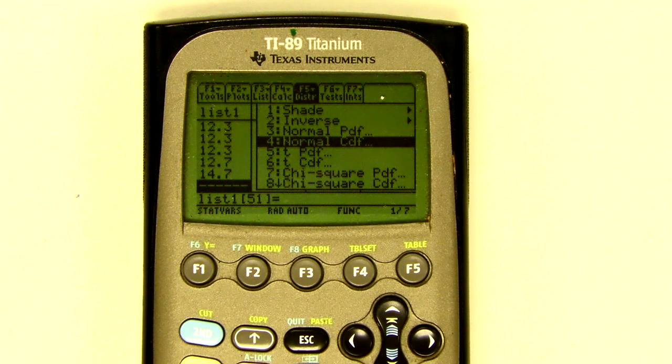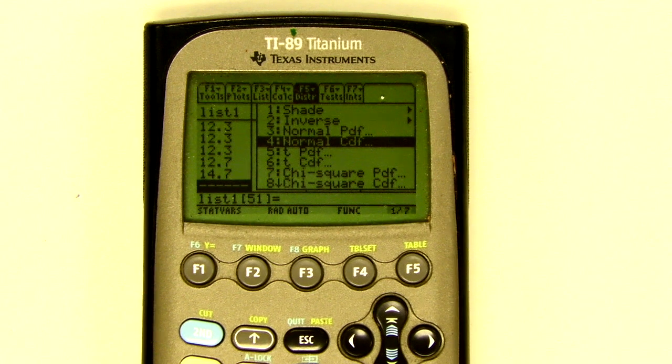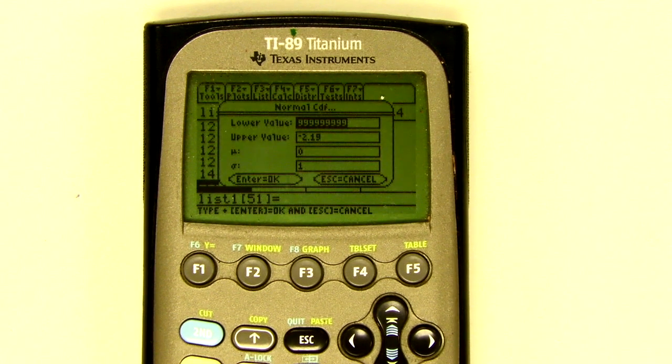That's the cumulative density function, where we have adding up of all the area underneath the curve, and that's where we're going to go. The nice thing about the TI-89 is it understands infinity, or negative infinity.